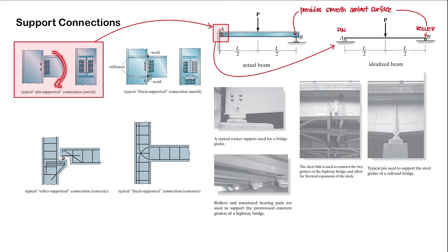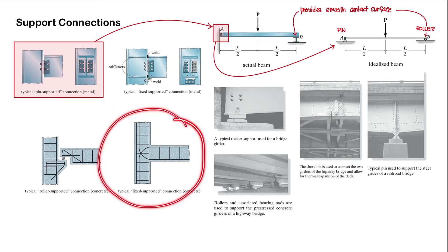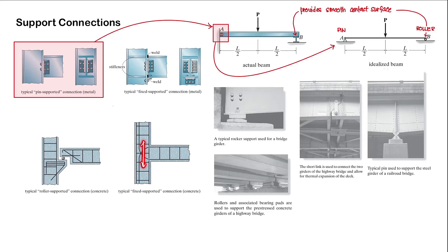There is no prevention for some rotation. Likewise, for our typical roller-supported connection, the only movement that is being prevented is vertical translation. Our structure or beam could actually move horizontally and is also free to rotate to a very small degree. And then we have our fixed connection — it is prevented from moving in all directions. So we don't have horizontal translation, we don't have vertical translation, and we don't even have some rotation. It is prevented by the connection itself, as you can see here with this typical fixed support connection that is bolted together.